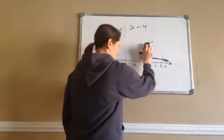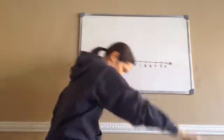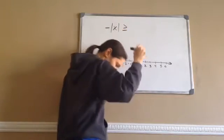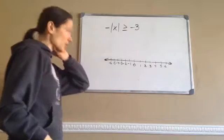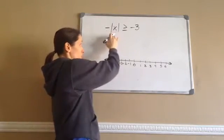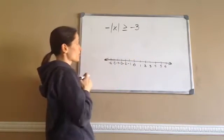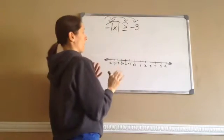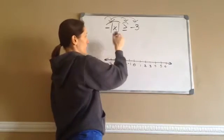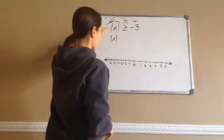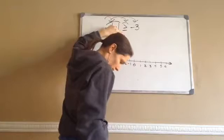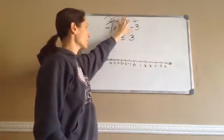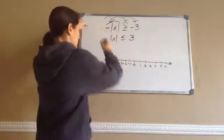Now this next one I really want you to pay attention to because it could get confusing. The problem is negative absolute value of x greater than or equal to negative 3. There's an easier way to handle this: take the opposite of everything. The opposite of negative absolute value of x is just absolute value of x. The opposite of greater than or equal to is less than or equal to. The opposite of negative 3 is positive 3. So this becomes absolute value of x less than or equal to 3, which is much easier to work with.